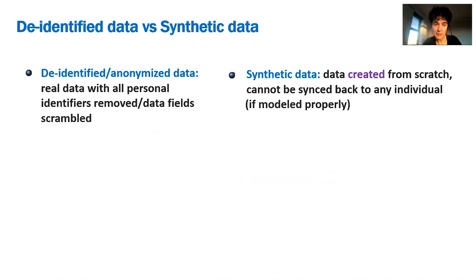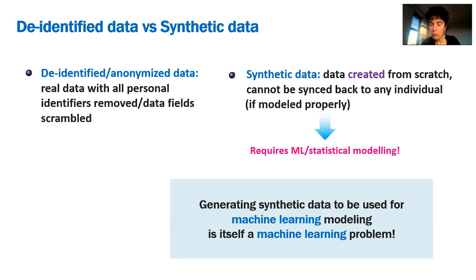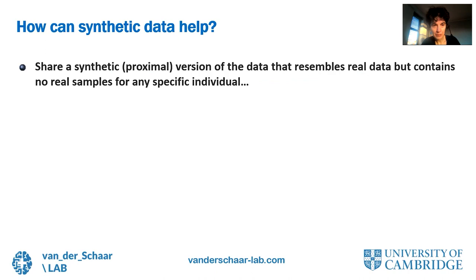So the lack of such high quality healthcare data impedes our research in machine learning. One solution is to share data that was first anonymized or de-identified. But the key challenge is that it is often either highly disclosive and hence shouldn't be shared, or it is of low quality because too many fields have been removed. So five years ago we proposed a totally different way to share data with machine learning researchers using synthetic data — data created from scratch which cannot be linked back to any individual if modeled properly. But this requires machine learning research.